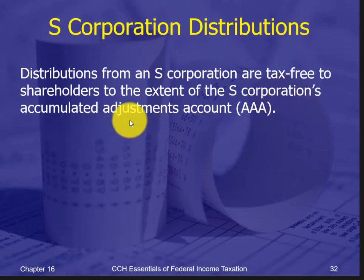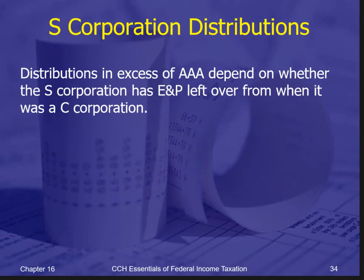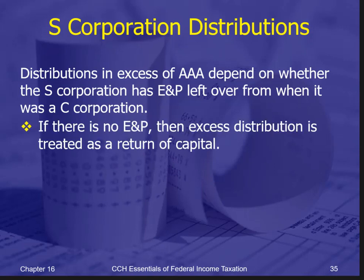The AAA — Accumulated Adjustments Account — is the amount of income earned by the S-Corporation but not yet distributed to shareholders, sort of like retained earnings in a regular corporation. It can go below zero due to losses, but a distribution cannot cause it to go below zero. If a distribution would bring it to zero or below, that portion becomes a taxable transaction — especially if there is earnings and profits remaining from a prior period as a C-Corporation.